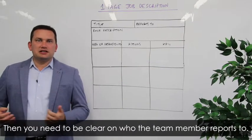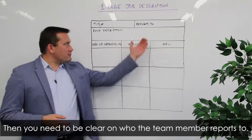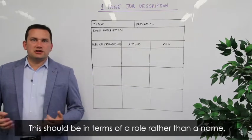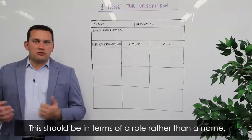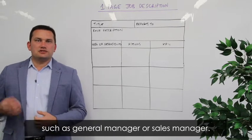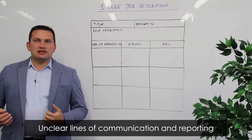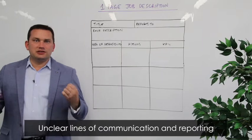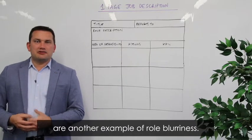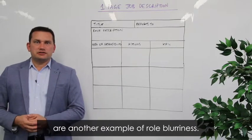Then you need to be clear on who the team member reports to. This should be in terms of a role rather than a name — so the general manager or sales manager — because unclear lines of communication and reporting are another example of role blurriness.